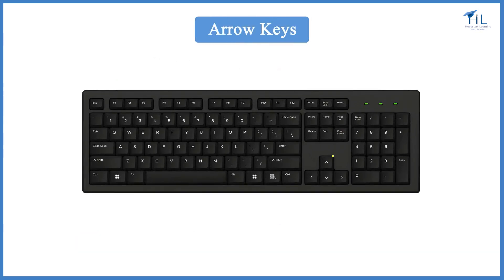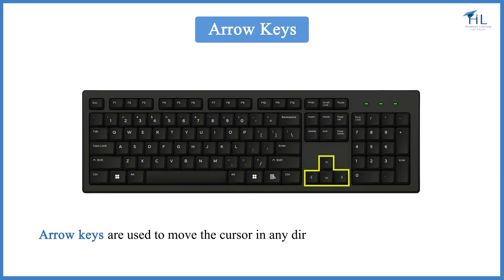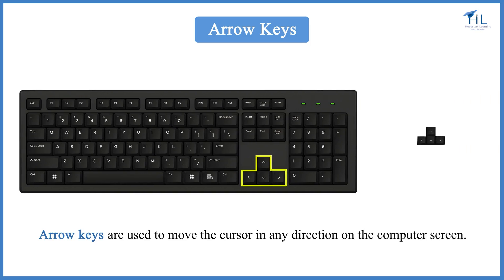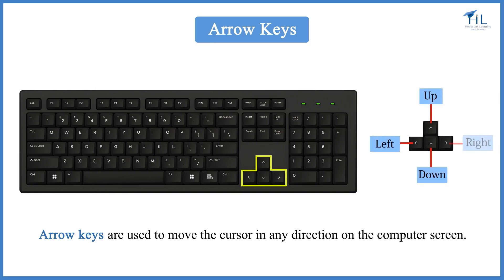This set of four keys is called arrow keys or cursor keys. Arrow keys are used to move the cursor in any direction on the computer screen. The four arrow keys are up, down, left, and right.